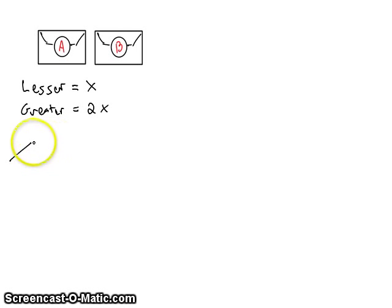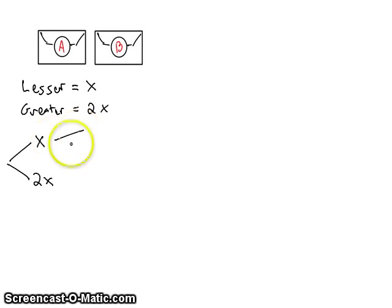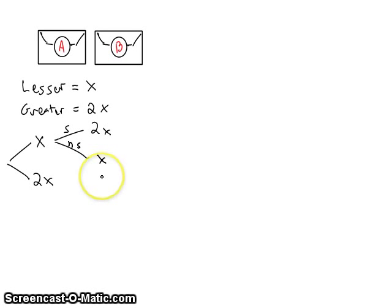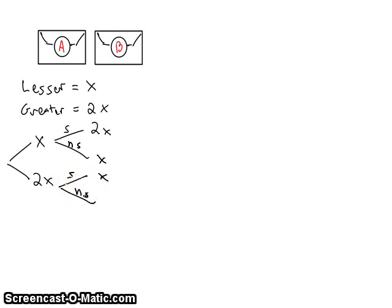When we make our first choice, we're either going to choose the envelope with x dollars in it or the envelope with 2x dollars in it. Then we have a choice — we can either switch or not switch. If we choose to switch and we chose the original lesser envelope, that'll wind up being a good choice; we'll get twice as much money. If we choose not to switch, we'll keep our original x dollars. If instead we had originally chosen the greater amount and we switch, we'll wind up with less money, and if we choose not to switch, we'll wind up with the same amount.